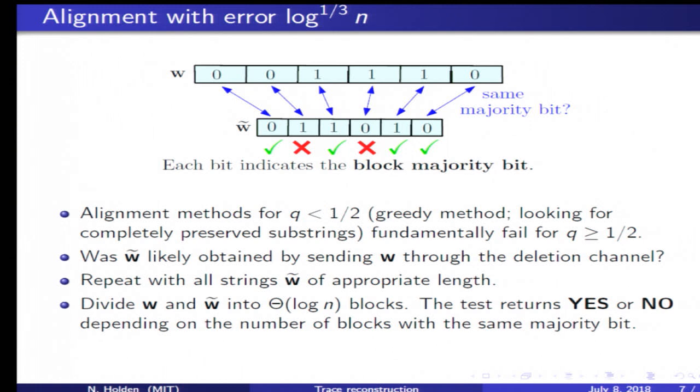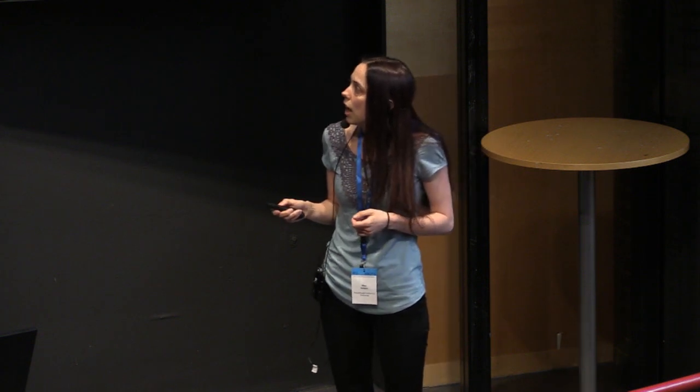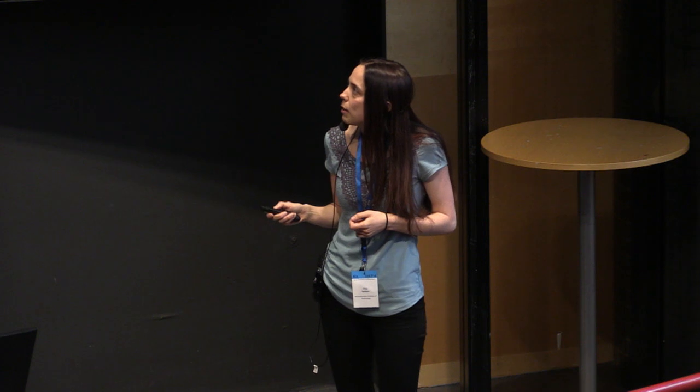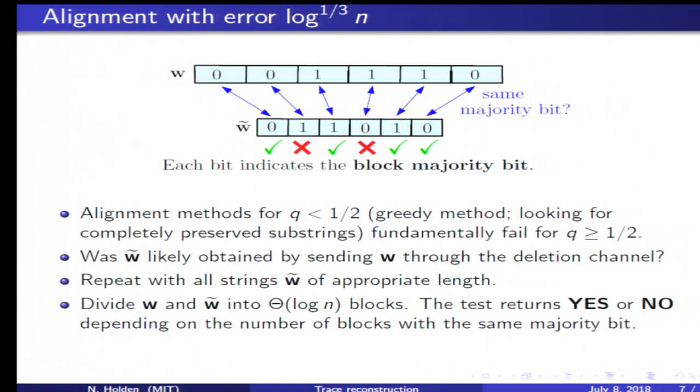How is our test defined? Our test takes as input these two strings W and W tilde. It is defined by dividing these strings into approximately log n blocks. In each of these blocks, there is a majority bit equal to either zero or one. The bits indicated on the figure indicate the majority bit in each block.